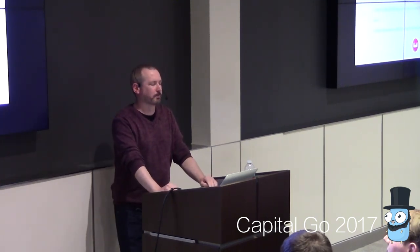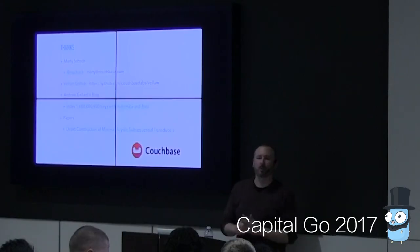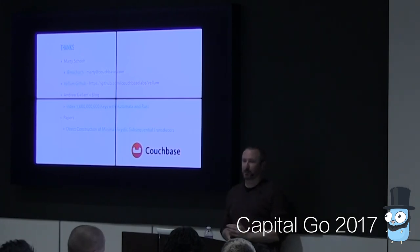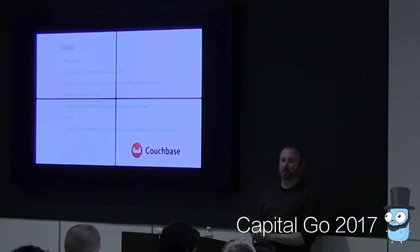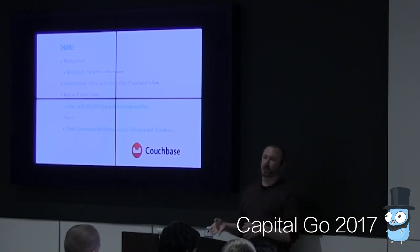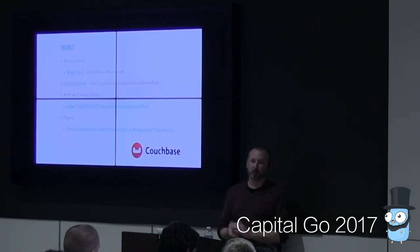Q: Lucene has had finite state transducers for four years — any comparison or lessons learned? A: Lucene came to the same conclusion years ago. They use FSTs and they work well for regular expression search, fuzzy matching, and prefix searches — all operations that typically start with a term dictionary. The FST works really well for that. We haven't switched Bleve to use it yet; we're still in the process of evaluating using an FST for the term dictionary.